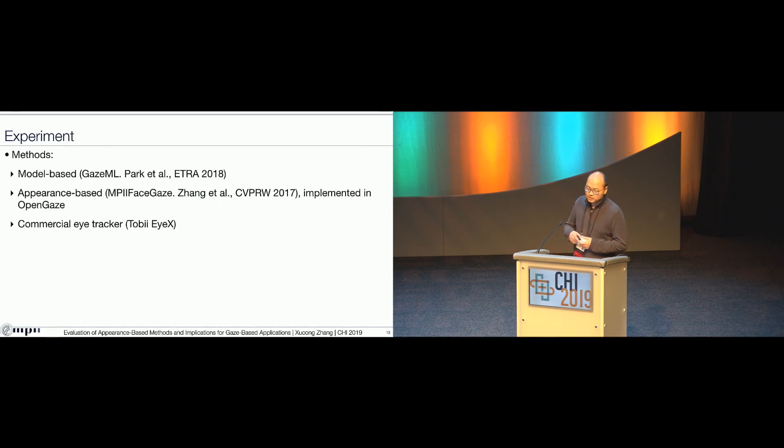For the experiment, we compare three types of methods. The first one is model-based gaze estimation which is GazeML published last year. Also the current state-of-the-art model-based method. The second is appearance-based gaze estimation which is one of our previous works. Also, it's the implementation inside the proposed OpenGaze toolkit. The last one is the commercial eye tracker which is the Tobii RX.